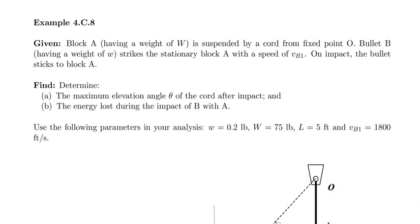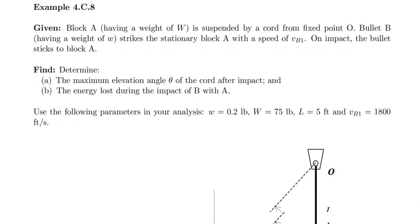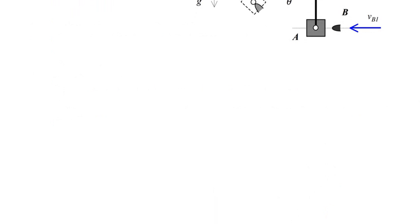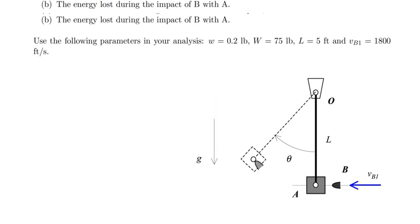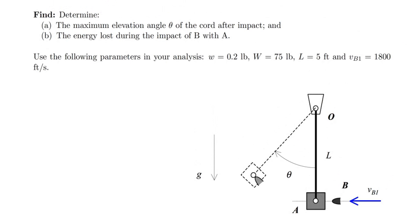Okay, so in this problem we have block A, which has a weight of W, and we're told that it's suspended by a cord from a fixed point at O. A bullet B having a weight of little w strikes a stationary block with a speed of VB1. On impact, the bullet actually sticks to block A. Given this information, we're asked to determine the maximum elevation angle theta in the cord after impact, and also the energy lost during the impact event.